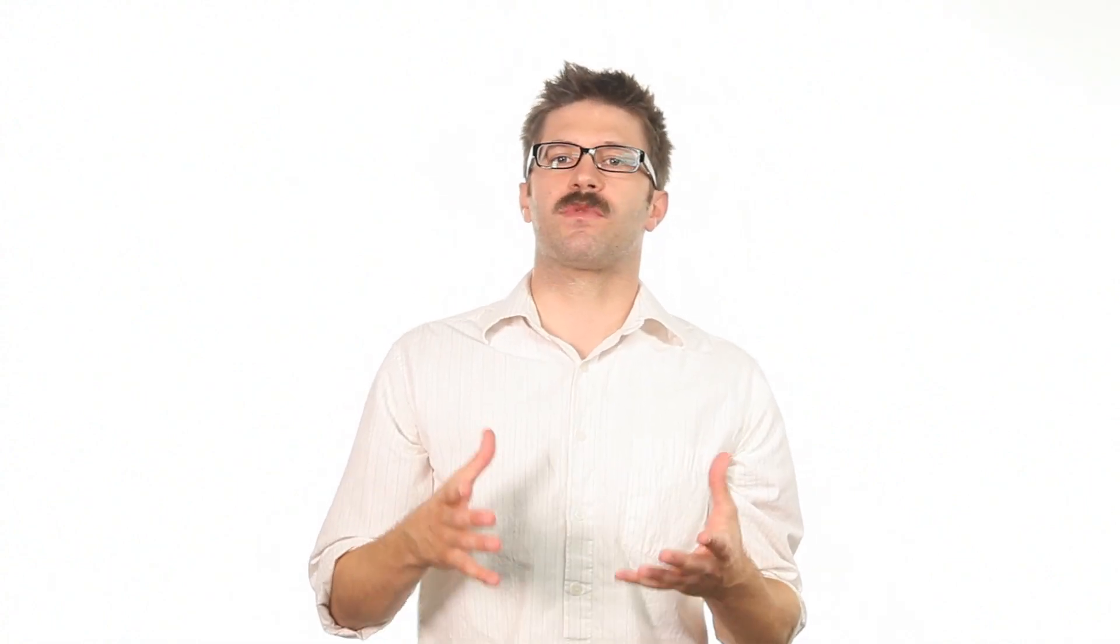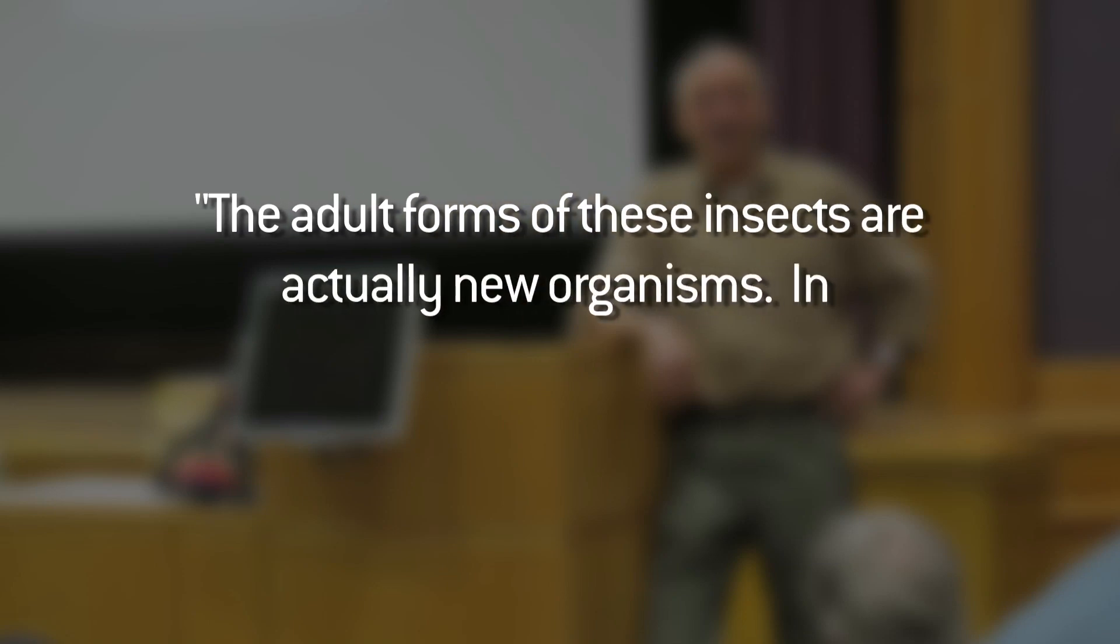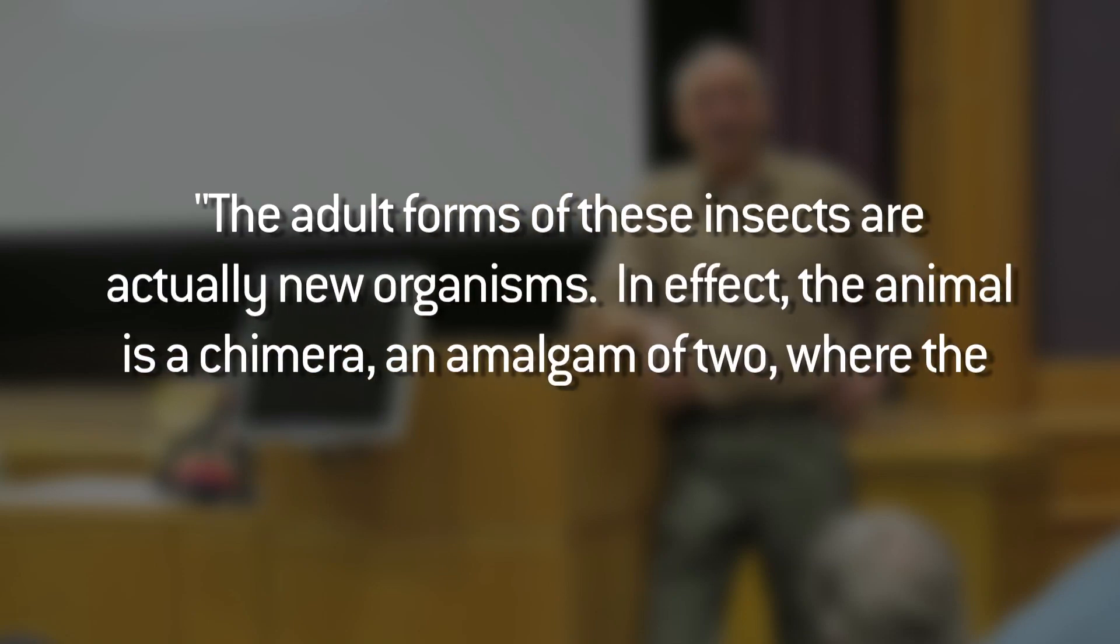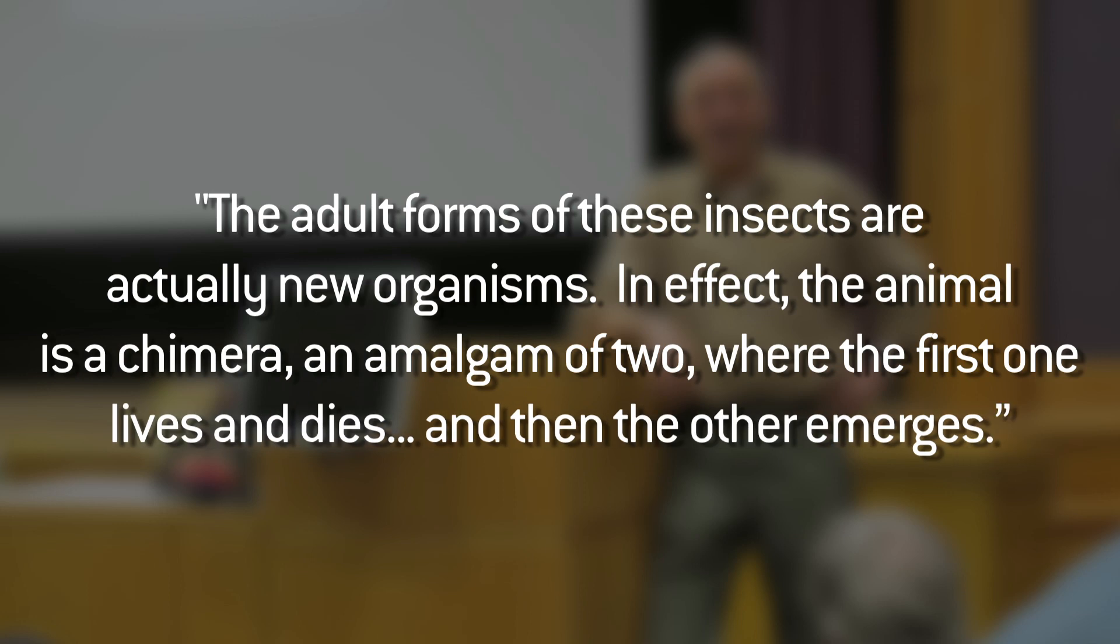The theory states that the change is a result of death and resurrection. One species dies in the cocoon and another entirely different new organism emerges. Not related, different DNA, a new winged creature. He says, the adult forms of these insects are actually new organisms. In effect, the animal is a chimera, an amalgam of two where the first one lives and dies and then the other emerges.